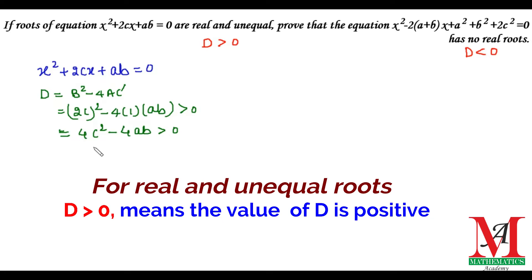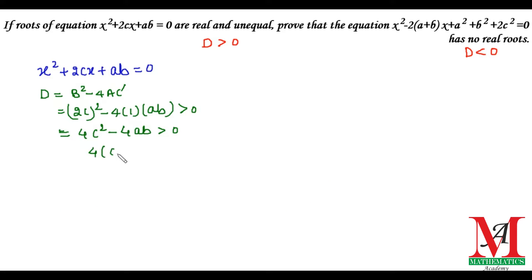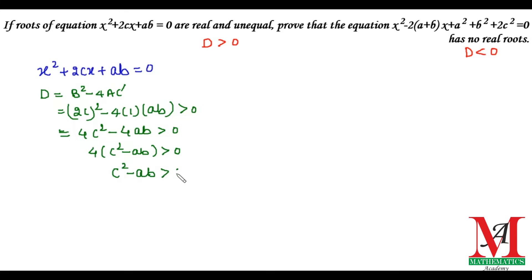Taking 4 as common, we get 4(c² - ab) > 0, which simplifies to c² - ab > 0. We will use this result later, so we label it as Equation 1.